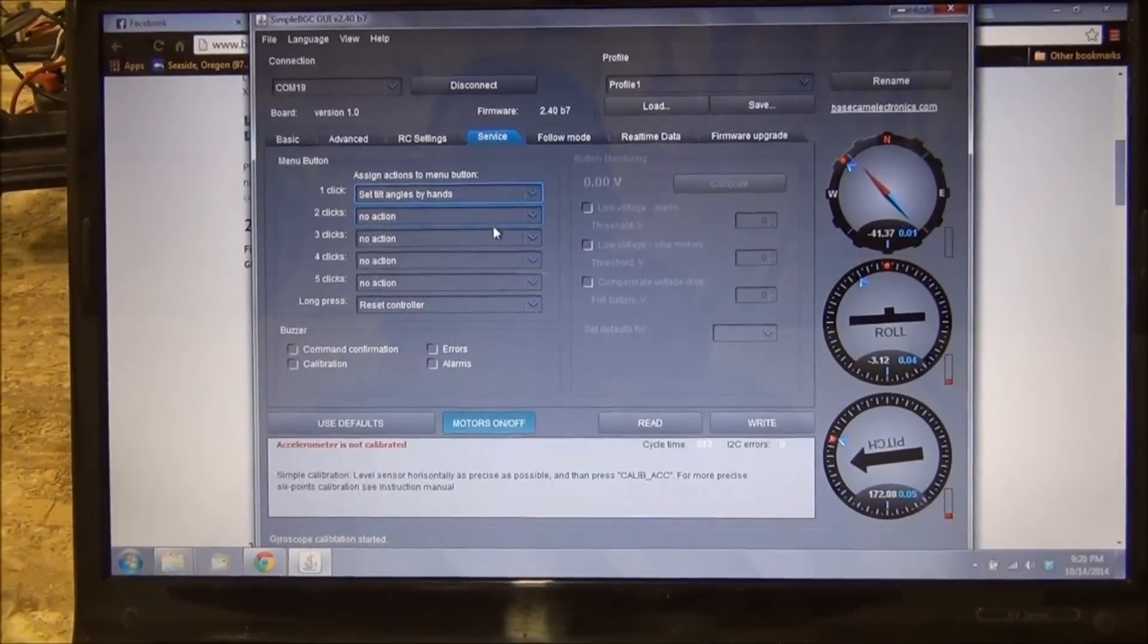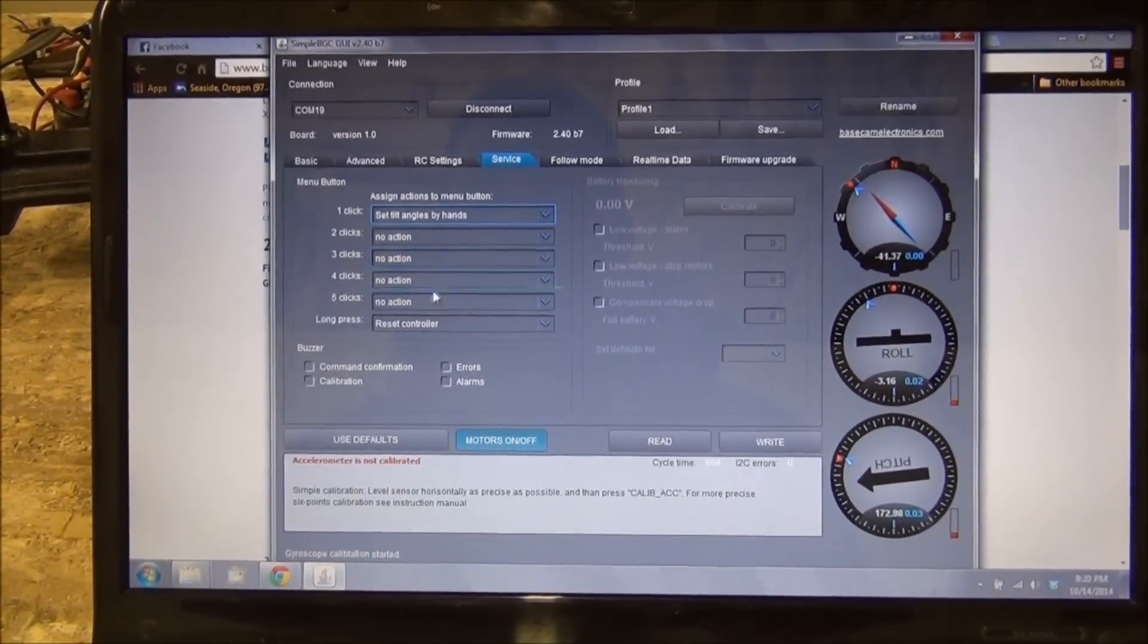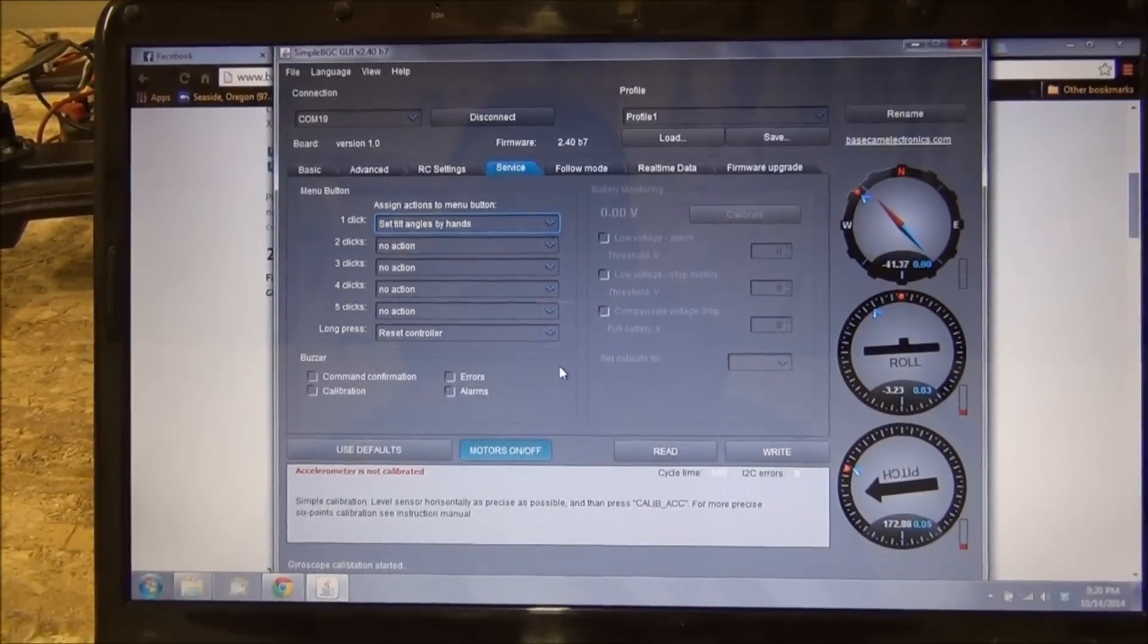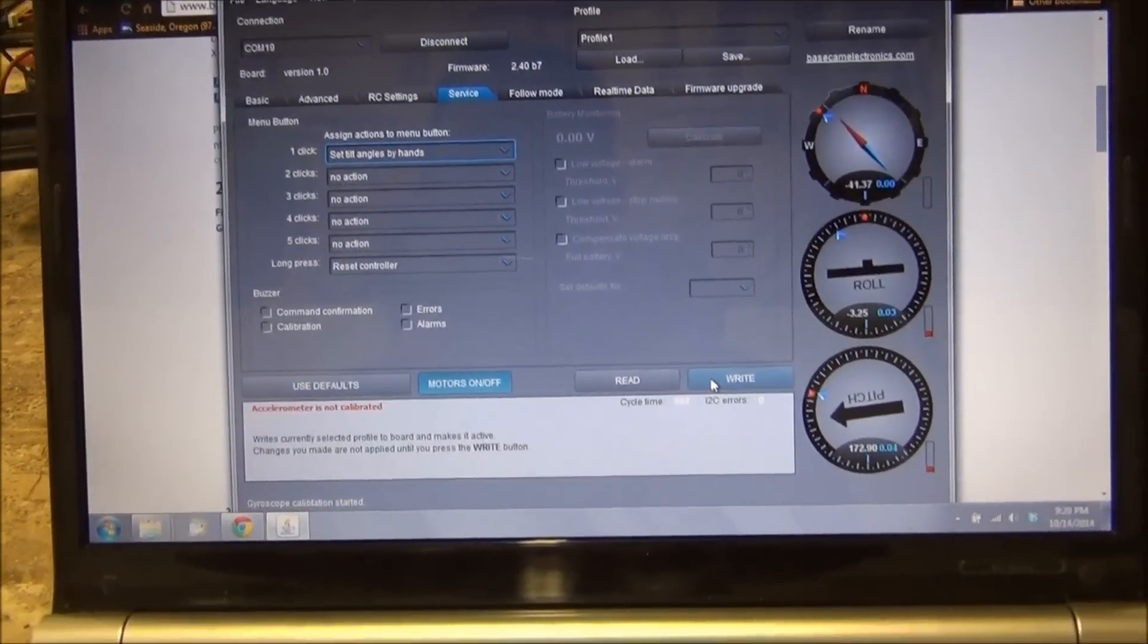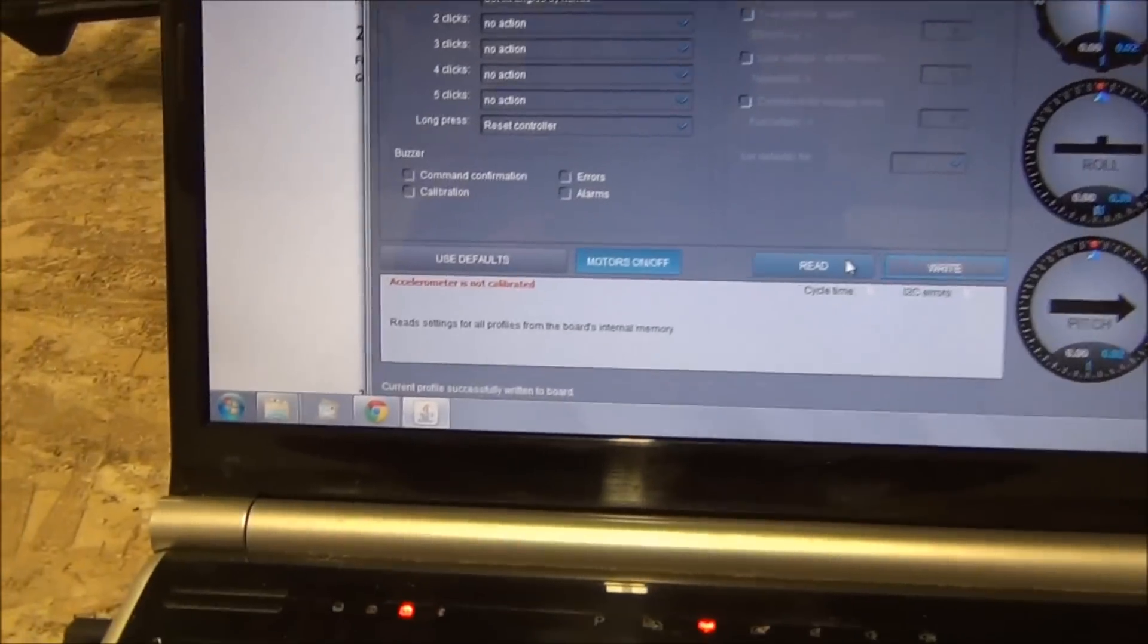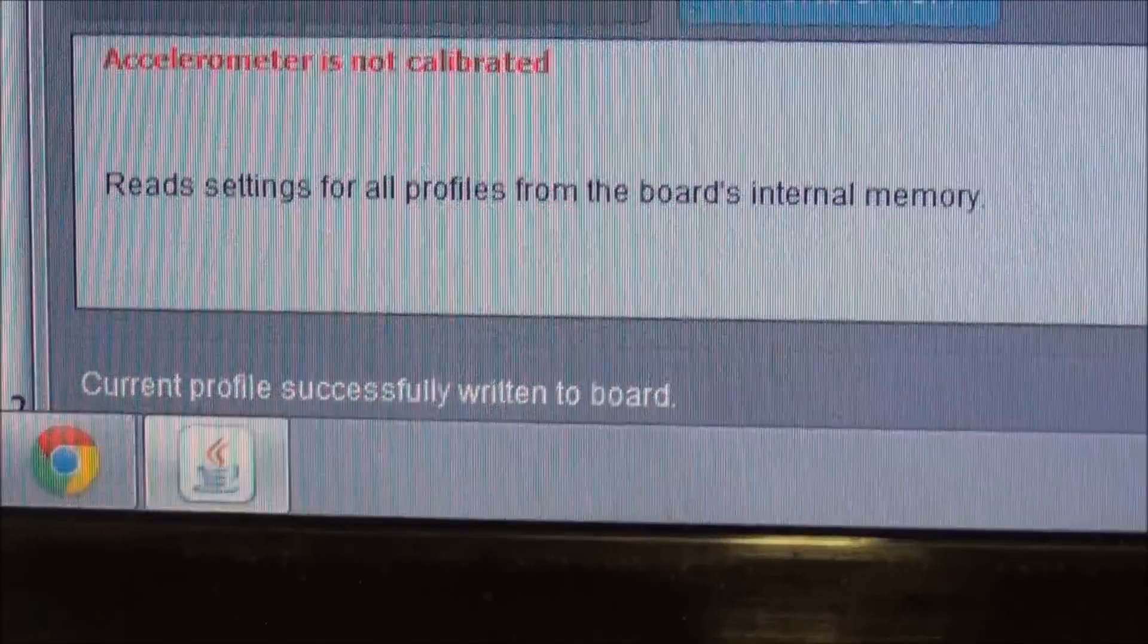If I don't have my transmitter with me, then I can set the camera angle by hand. So that's pretty much all the changes we're going to make. We're going to go ahead and go down here to the right button. We'll write them. It says current profile successfully written to board right there.